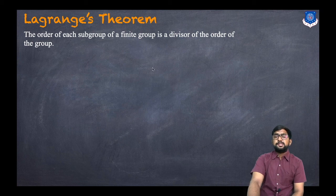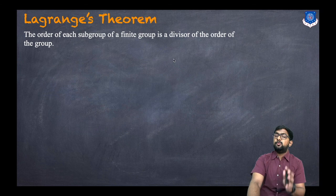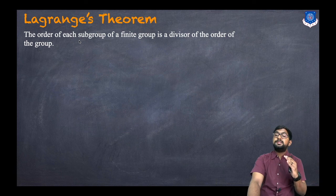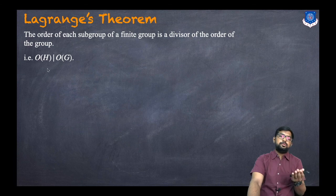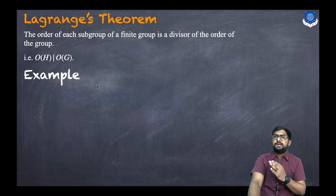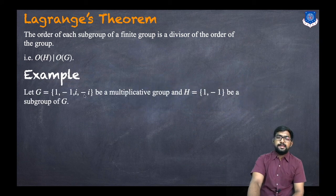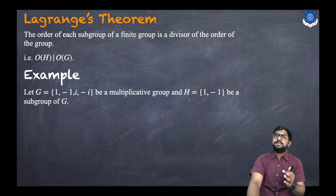Now let us discuss Lagrange's theorem. The statement is: the order of each subgroup of a finite group is a divisor of the order of the group. That is, order of H divides order of G, where H is a subgroup of G. So the subgroup's order divides the main group's order. For example, let G = {1, -1, i, -i} be a multiplicative group and H = {1, -1} be a subgroup of G.